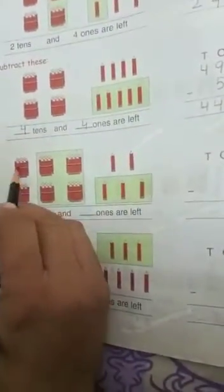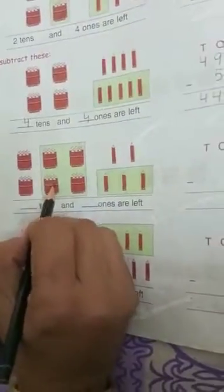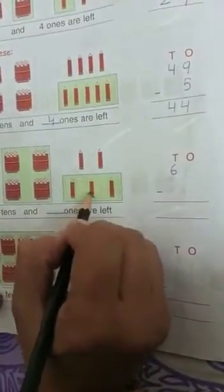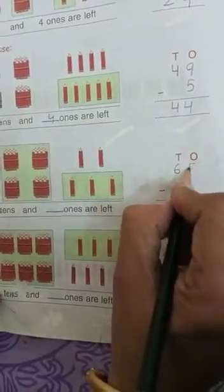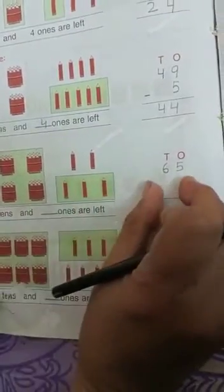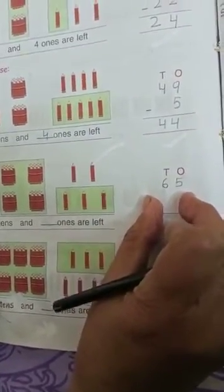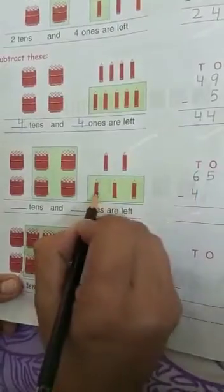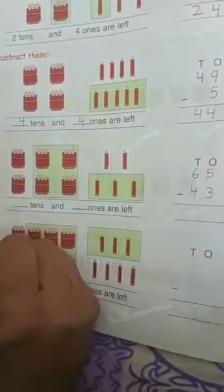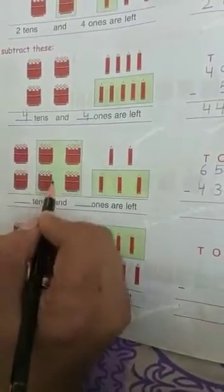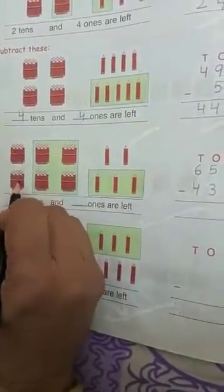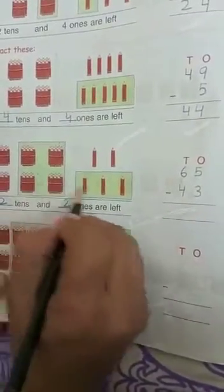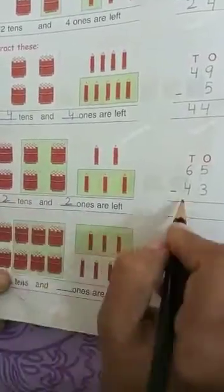Now next question. There are 6 tens and 5 ones — 65 pencils total. Now we have to subtract 4 tens and 3 ones. The pencils without boxes are left: 2 tens and 2 ones. The answer is 22.